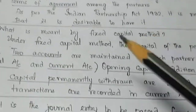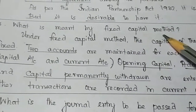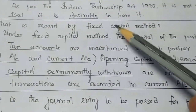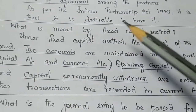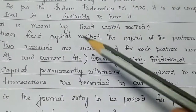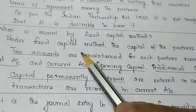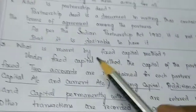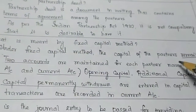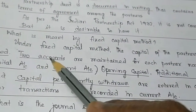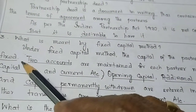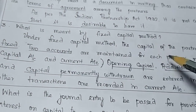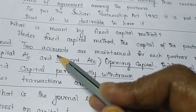Question Number 3: What is meant by the Fixed Capital Method? We will see two methods — Fixed Capital and Fluctuating Capital. Under the Fixed Capital Method, the capital remains fixed. If you have capital, each partner will maintain two accounts.